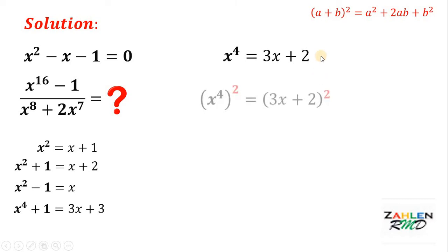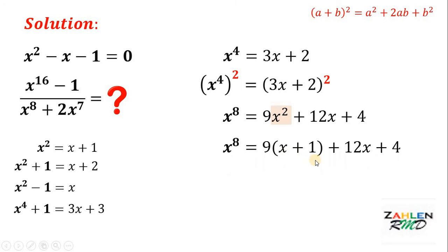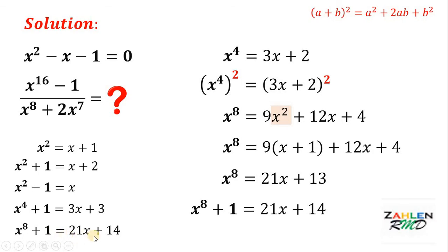Squaring both sides of x to the fourth equals 3x plus 2, and using the same identity, the right-hand side becomes 9x squared plus 12x plus 4, while the left side is x raised to 8. We substitute x squared with x plus 1, then combine like terms: 9x plus 12x gives 21x, and 9 times 1 plus 4 gives 13. So x raised to 8 equals 21x plus 13. Adding 1 to both sides gives x raised to 8 plus 1 equals 21x plus 14.